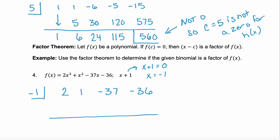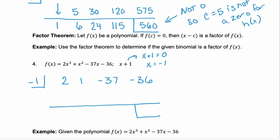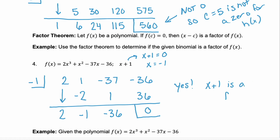Make sure that your polynomial is in descending order and that every term has a placeholder. Write the coefficients: 2, 1, negative 37, negative 36. We are dividing by that zero, negative 1. Remember to draw your bar, and we want that box for our remainder to see if we have a zero. Bring that first coefficient down: 2. Multiply: 2 times negative 1 is negative 2. Add vertically: negative 1. Multiply: negative 1 times negative 1 is positive 1. Add vertically: negative 36. Multiply that negative 36 by negative 1: we get positive 36. We're adding vertically, and we get 0. So this is a big yes — x plus 1 is a factor.